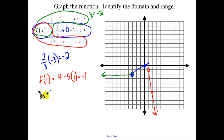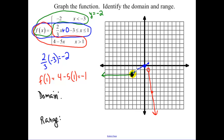Now finding domain and range. For domain: we start at negative 3 and go left for everything less than negative 3. From negative 3 to 1 all x values are covered, and at x equals 1 there's a filled-in hole at the point (1, 2/3). The bottom function eventually covers all remaining x values. So the domain is all real numbers.